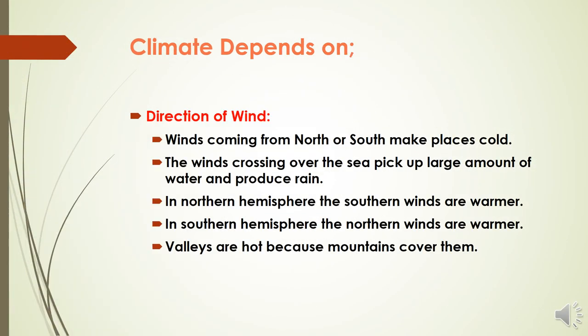Winds coming from the north or south make places cold because they are coming from cold areas. When winds cross over the sea, they pick up large amounts of water and produce rain. In the Northern Hemisphere, winds blowing from the south are warmer, and in the Southern Hemisphere, winds blowing from the north are warmer. Places and valleys often do not get winds and generally remain hot because the mountains keep valleys sheltered.